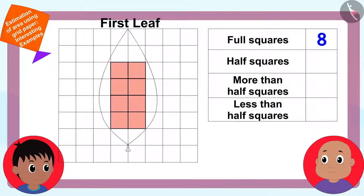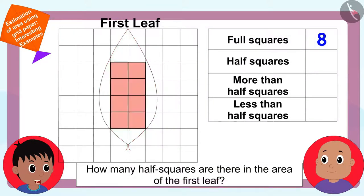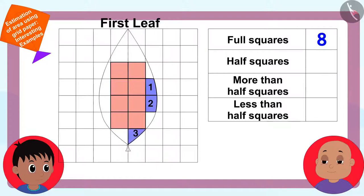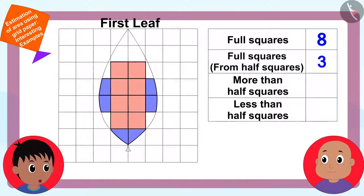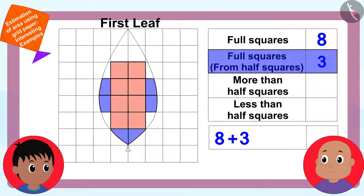Raju wrote down the number of full squares in this way. Now, can you tell me how many half squares are there in the area of the first leaf? Raju asked. Bablu looked closely and said, six squares. Six half squares. We can even write them equal to three full squares. Raju added three to the number of full squares previously written.